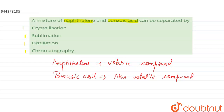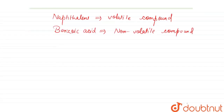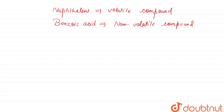So we can apply the process of sublimation. What happens is: naphthalene can sublime, and the remaining crystals will be of benzoic acid, because naphthalene is volatile.